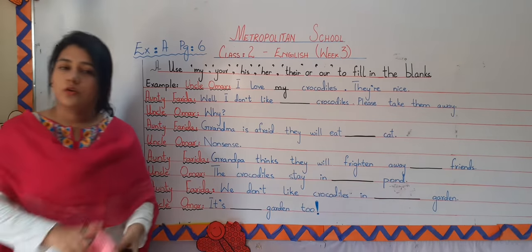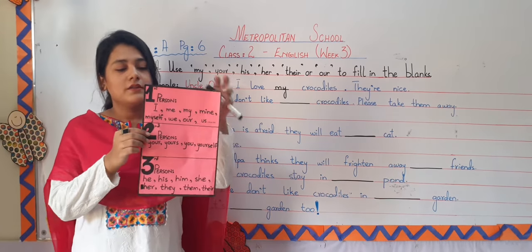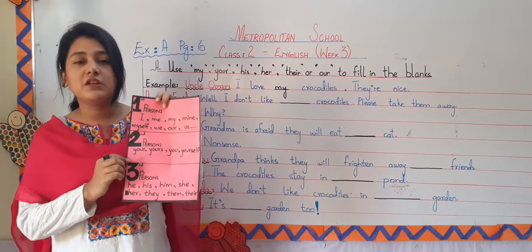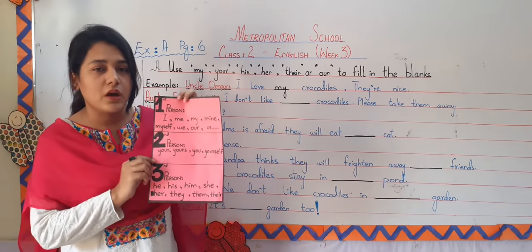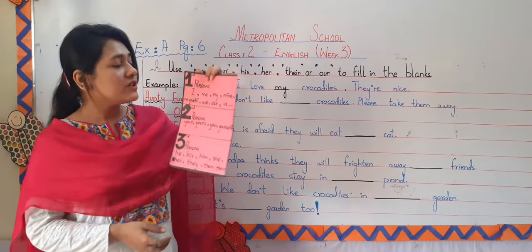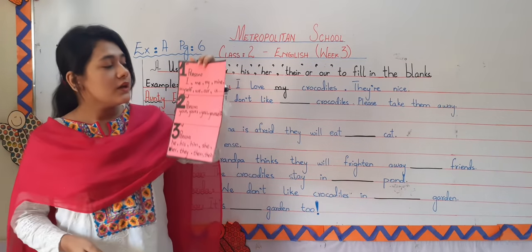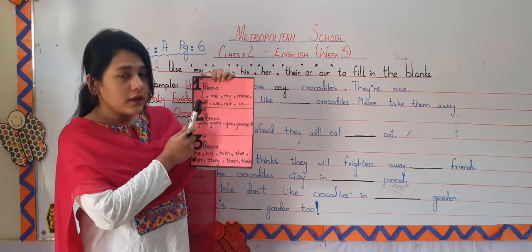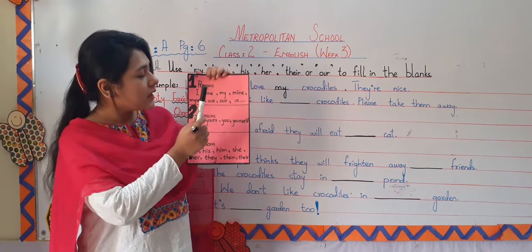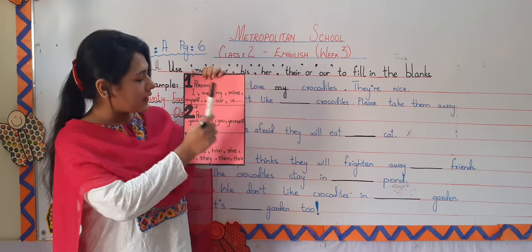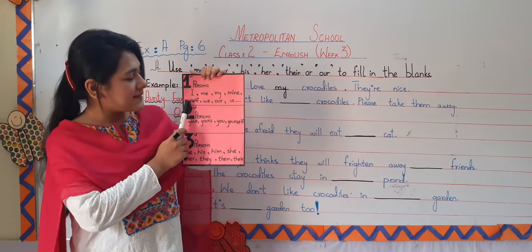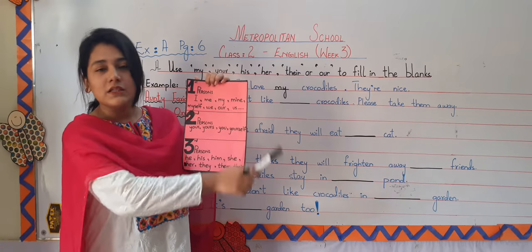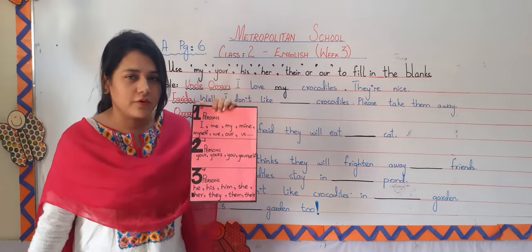Here is the first person, second person and third person distribution of pronouns. Now, first person — we use I, me, my, mine, myself, we, our, us, and so many more. We don't repeat the names of the person again and again.